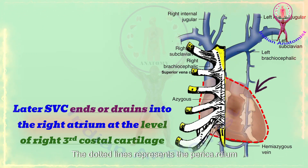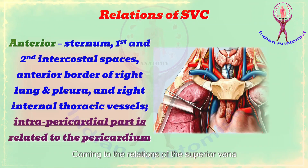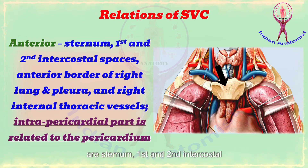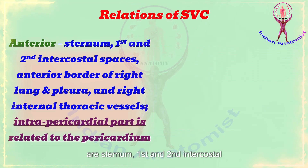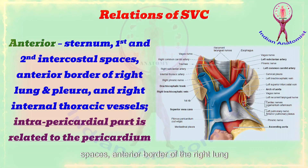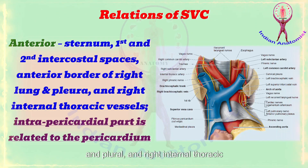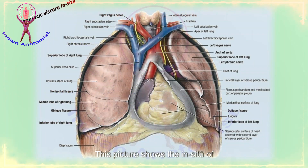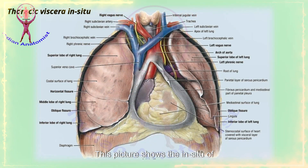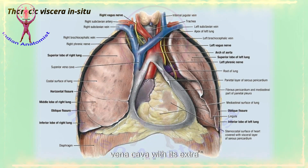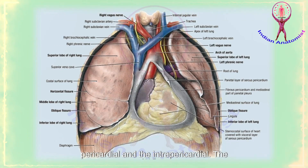The dotted lines represent the pericardium. The anterior relations of the superior vena cava are the sternum, first and second intercostal spaces, anterior border of the right lung and pleura, and right internal thoracic vessels. The intrapericardial part is also related to the pericardium. This picture shows the in situ of thoracic viscera including the superior vena cava and its parts, the extrapericardial and the intrapericardial.